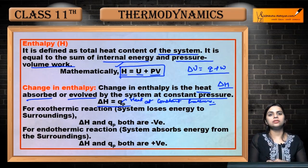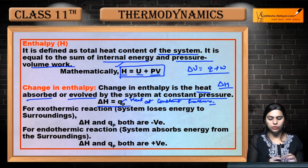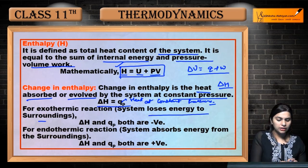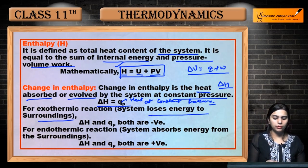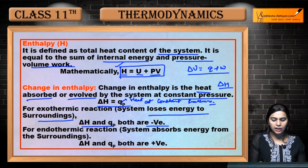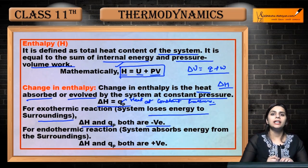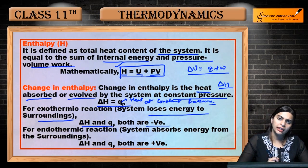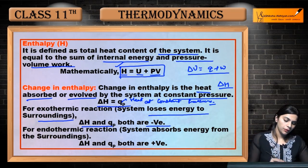For exothermic reactions — jis mein heat evolve hoti hai, system loses energy to surroundings — so ΔH and qp both are negative. Tab humari change in enthalpy ki value negative hogi aur heat ki value bhi negative hogi.